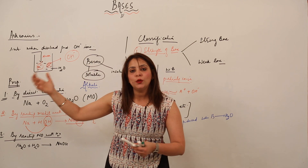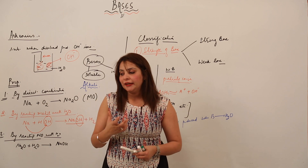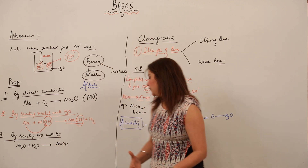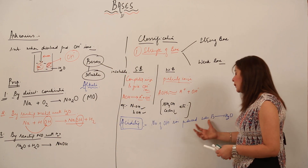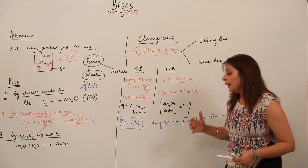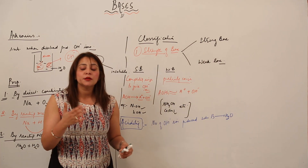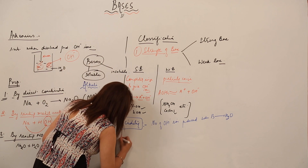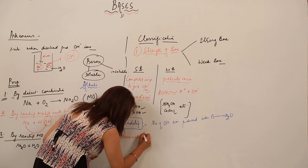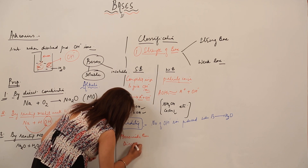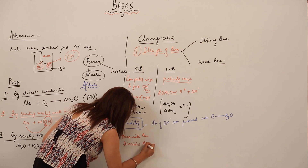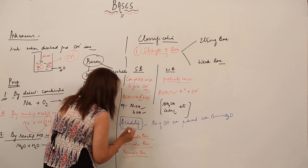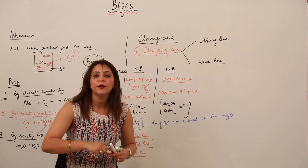Just as with basicity for acids — where we indicated the number of hydronium ions produced when an acid is dissolved in water — similarly, the number of hydroxide ions produced when a base is added to water gives the acidity. On this basis, bases are classified into different categories.